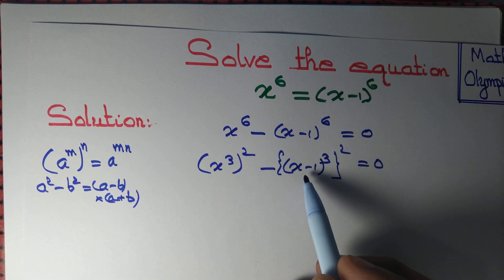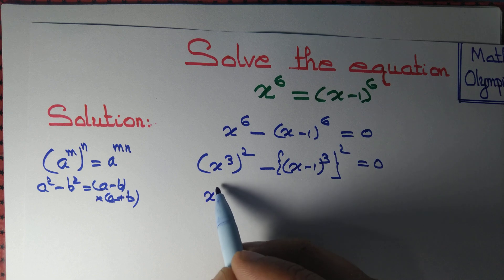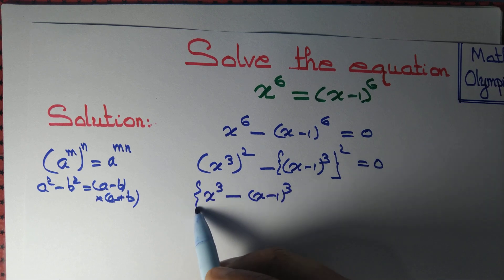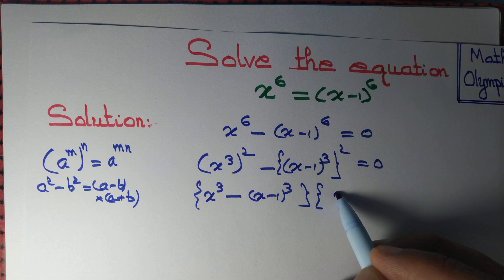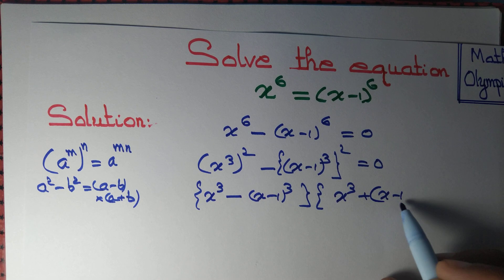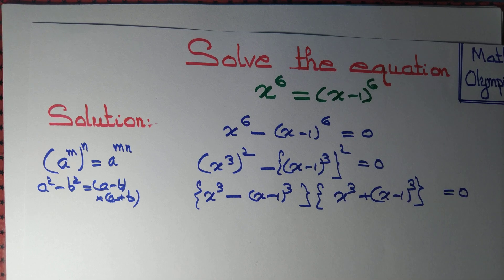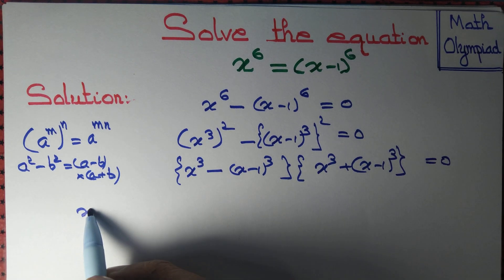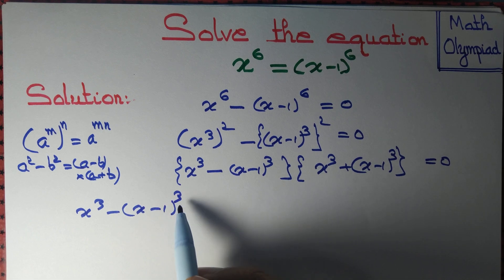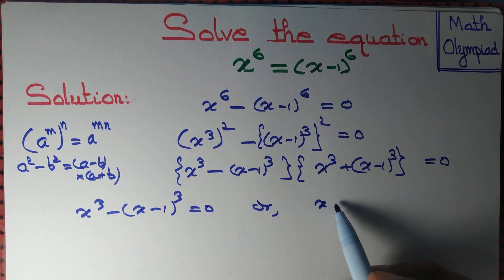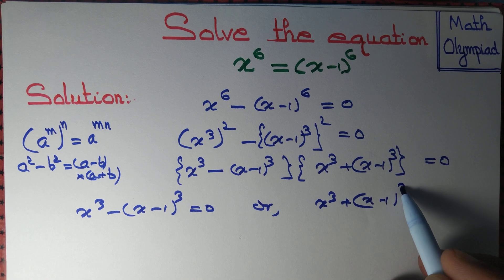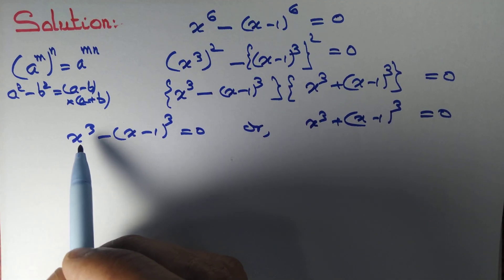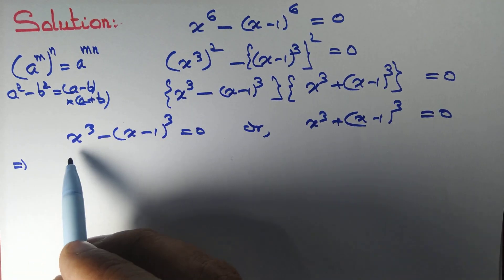Here a equal to x cube, b equal to x minus 1 whole thing cube. So this can be written as x cube minus x minus 1 whole thing cube, that's a minus b, whole thing into x cube plus x minus 1 whole thing cube equal to 0. Now we see that if the product of two numbers is 0, then one of them has to be 0. So either x cube minus x minus 1 whole thing cube equal to 0, or x cube plus x minus 1 whole thing cube equal to 0. It may be that both of them are 0, but at least one of them has to be 0. Now further we know that a cube minus b cube formula.